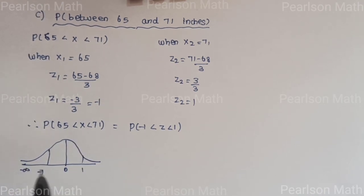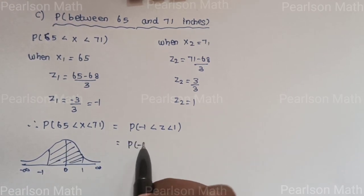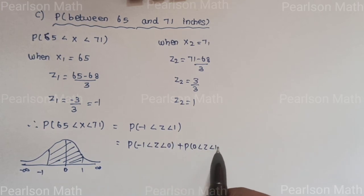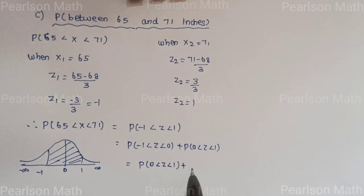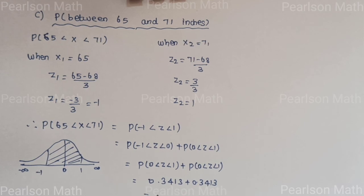On the normal distribution curve, −1 and +1 are marked. The area from −1 to 0 and 0 to 1 are shaded. P(−1 < Z < 1) = P(0 < Z < 1) + P(0 < Z < 1) = 0.3413 + 0.3413 = 0.6826.